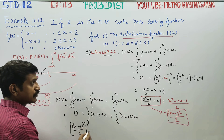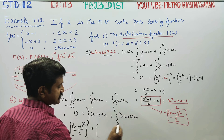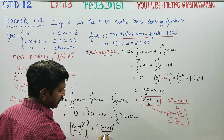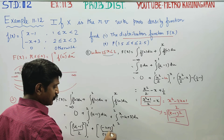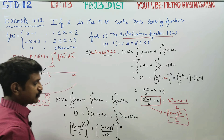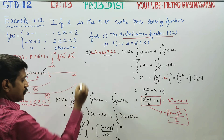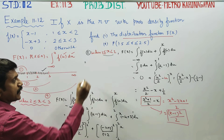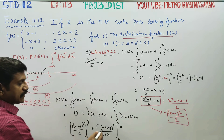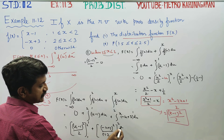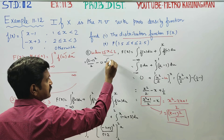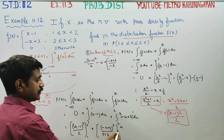Integrating minus u plus 3 with limits 2 to x: integrate to get minus (u plus 3) squared by 2 minus u. Upper limit minus lower limit — substituting upper limit x gives minus (x plus 3) by minus 2, and the lower limit substitution follows.